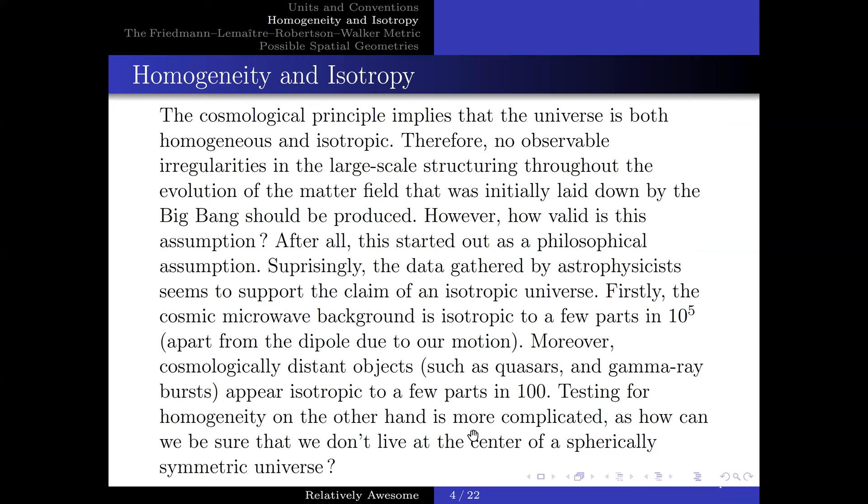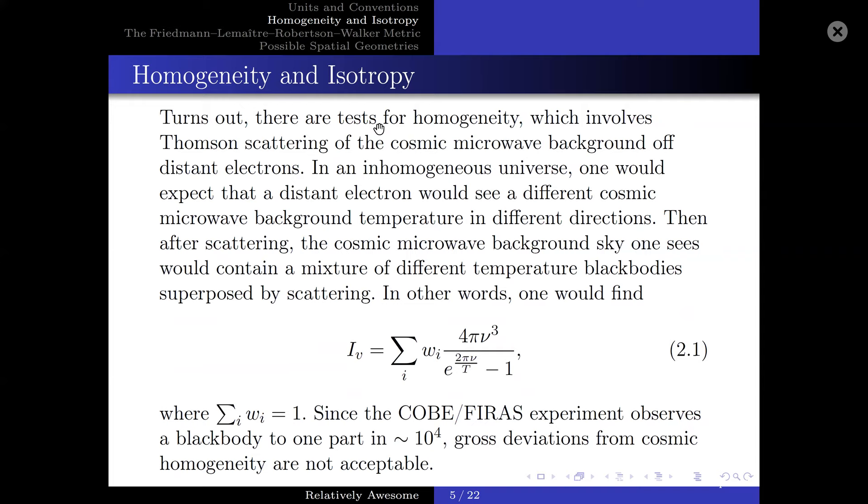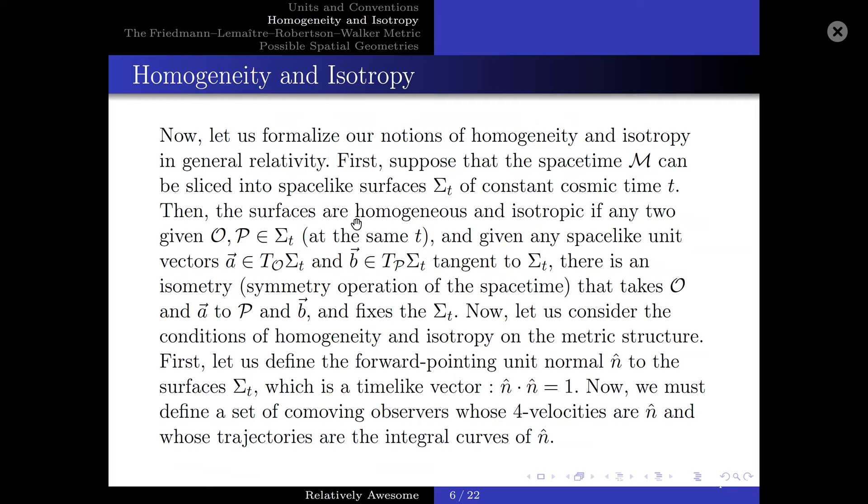On the other hand, testing for homogeneity is more complicated, as how can we be sure that we do not live at the center of a spherically symmetric universe? Turns out there are tests for homogeneity, which involve Thomson scattering of cosmic microwave background off distant electrons. In a homogeneous universe, one would expect a distant electron would see a different cosmic microwave background temperature in different directions. Then, after scattering, the cosmic microwave background sky one sees would contain a different mixture of temperature black bodies superposed by scattering. In other words, one would find I_ν, or the intensity, to be related to the frequency in the following manner, where ν is the frequency and T is the temperature. Since COBE and FIRAS experiments observe a black body to one part in 10 to the 4, gross deviations from cosmic homogeneity are not acceptable.